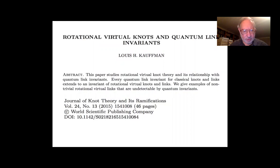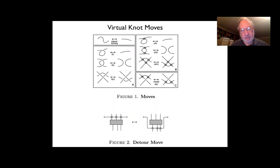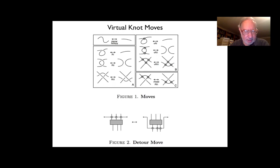We begin by reviewing virtual knots, and then I will explain what rotational virtual knots are. Virtual knots are obtained from classical diagrammatic knot theory by adding one extra kind of crossing called the virtual crossing, which you see indicated here on this slide, as two lines crossing transversely to one another with a little circle drawn around them.